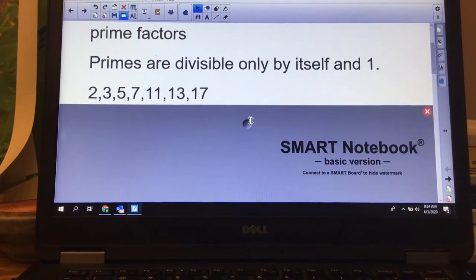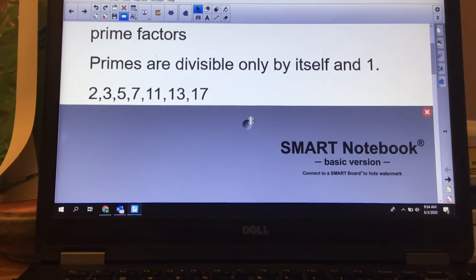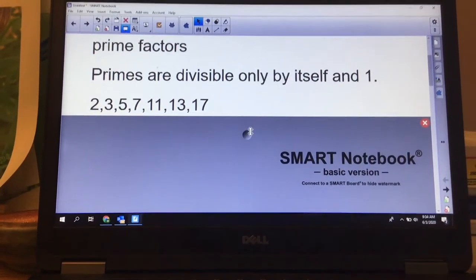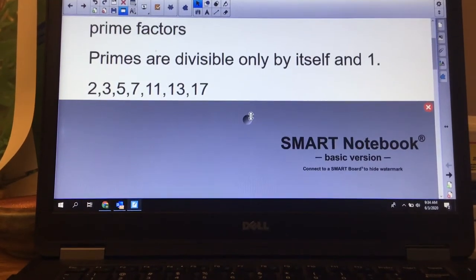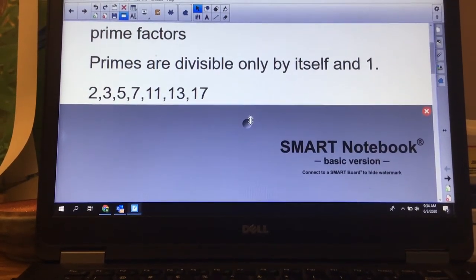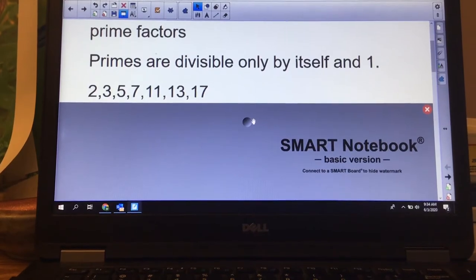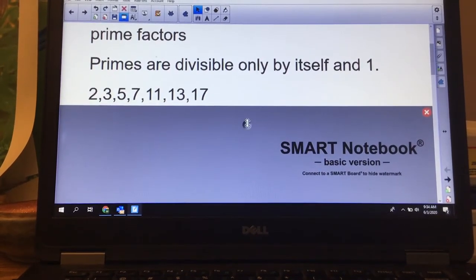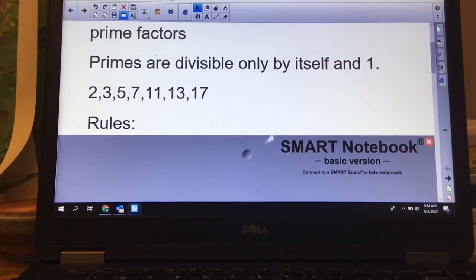Our primes that we should be remembering - we don't really consider one because if you divide something by one it doesn't get smaller - are 2, 3, 5, 7, 11, 13, 17. Just memorizing those seven would be really helpful.